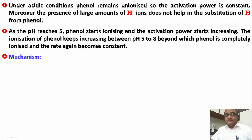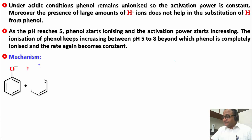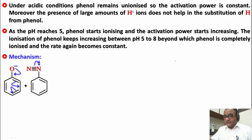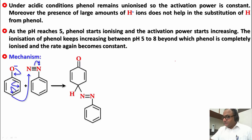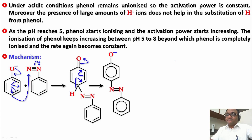Let's check the mechanism. We have the phenoxide and the diazonium ion. The electrons attack the N of the diazonium ion — this bond goes to N, and there is an attack on this N — giving the intermediate. The intermediate then loses a proton to regain the aromatic nature of phenoxide, and we get the product.